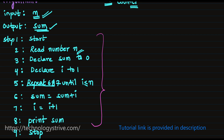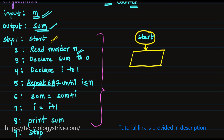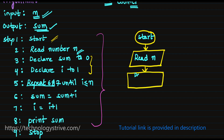Now let's convert the algorithm to a flowchart. Step 1 is Start — we use an oval shape for start or stop. Step 2 is reading input N — for input/output we use a parallelogram, so draw one and write 'Read number N'. Steps 3 and 4 are declarations combined into one rectangle: 'Declare sum = 0, i = 1'.